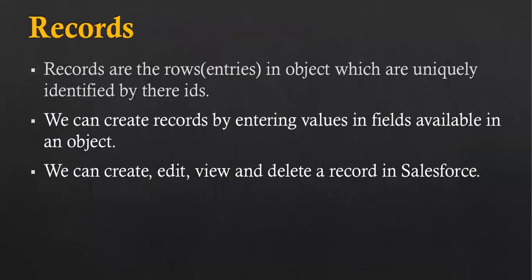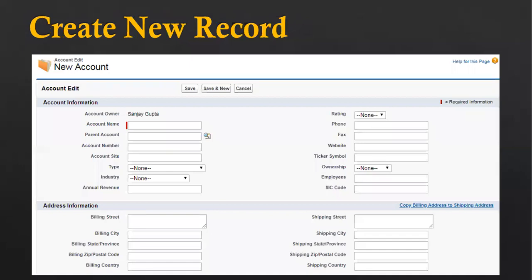Then come records. Records are the rows or entries in an object, which are uniquely identified by their IDs. We can create records by entering values in the fields available in an object, and we can create, edit, view and delete a record in Salesforce. In summary: a collection of fields creates a record, a collection of records creates an object, tabs are used to navigate around an object, and a collection of all objects and functionality is known as an app.